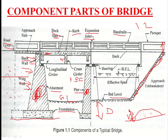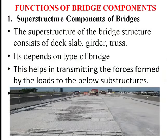Effective span is very important. Effective span means the center-to-center distance between supports. We denote it by small 'l'. The center-to-center distance between supports, whether it is abutment or pier, is the effective span. Here you also have the bearing, which we will explain in the next section on functions of bridge components.